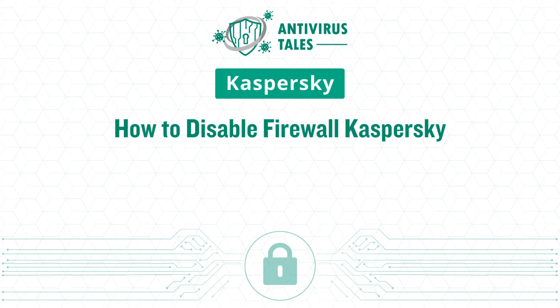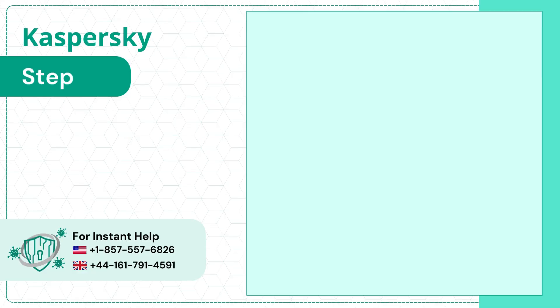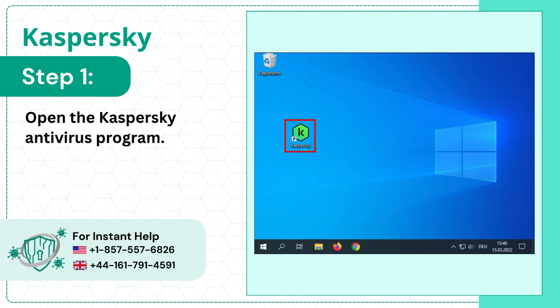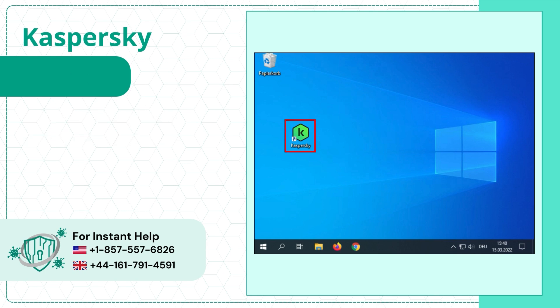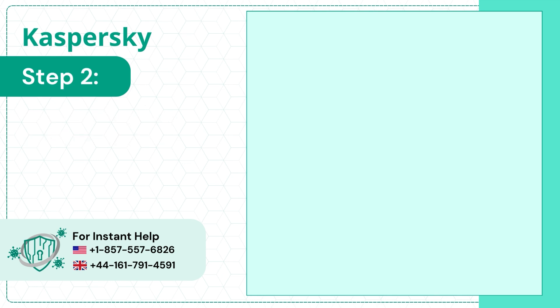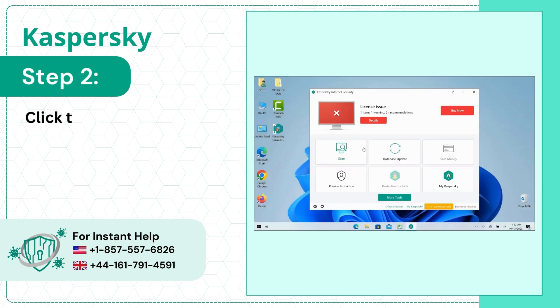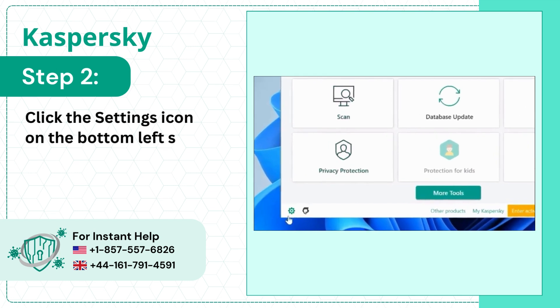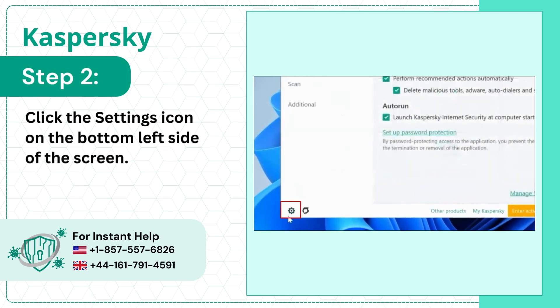How to Disable Firewall Kaspersky. Step 1: Open the Kaspersky Antivirus Program. Step 2: Click the Settings icon on the bottom left side of the screen.